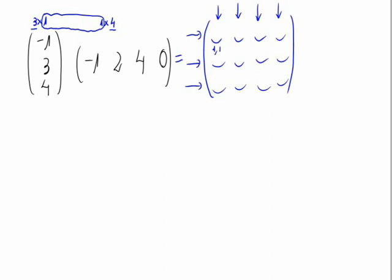Let's name the elements of the result matrix. Element 1,1 — first line times first column — is minus 1 times minus 1, which equals 1. Element 1,2 — first line times second column — is minus 1 times 2, which equals minus 2. The third element is minus 1 times 4, which equals minus 4. The fourth element is minus 1 times 0, which equals 0.